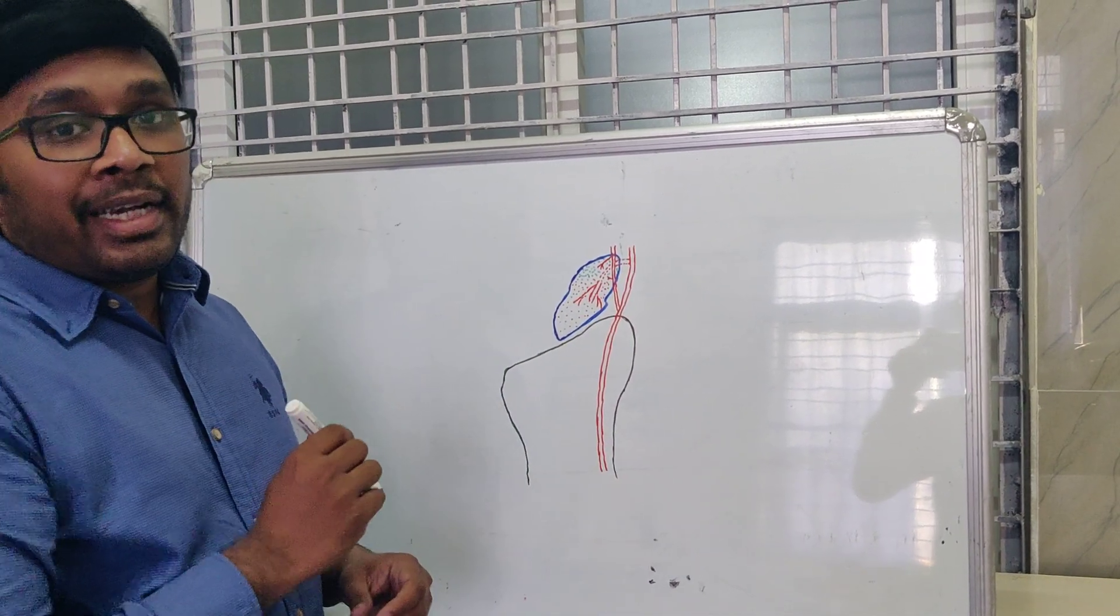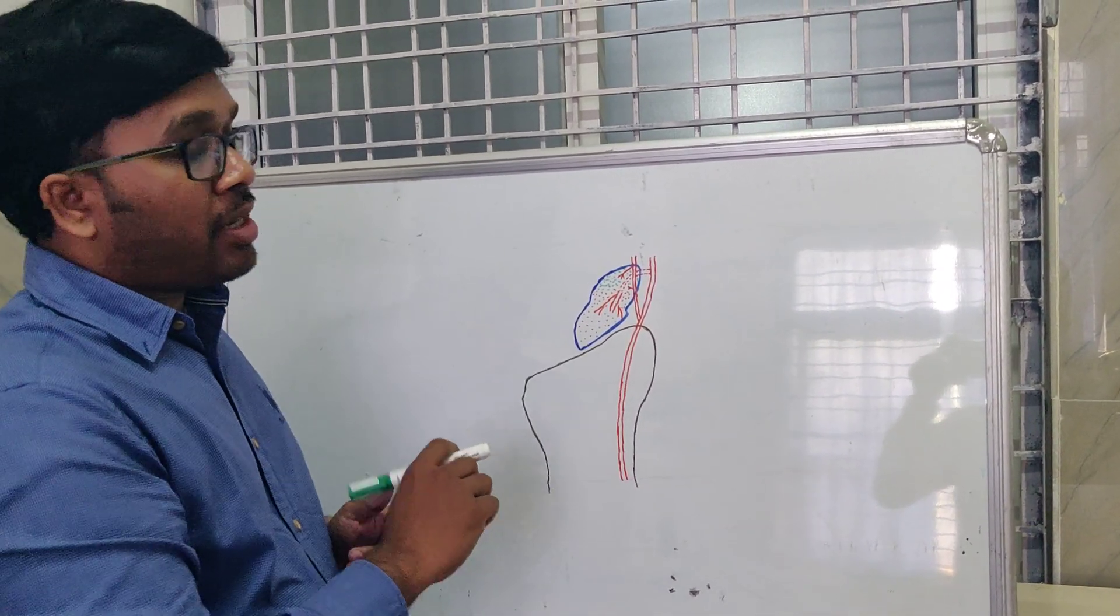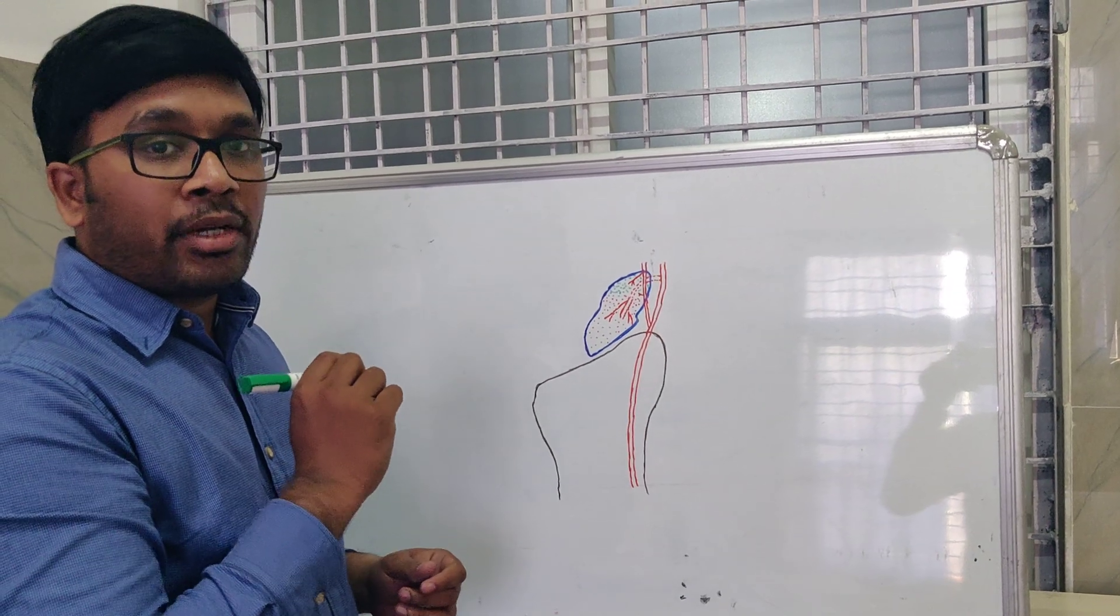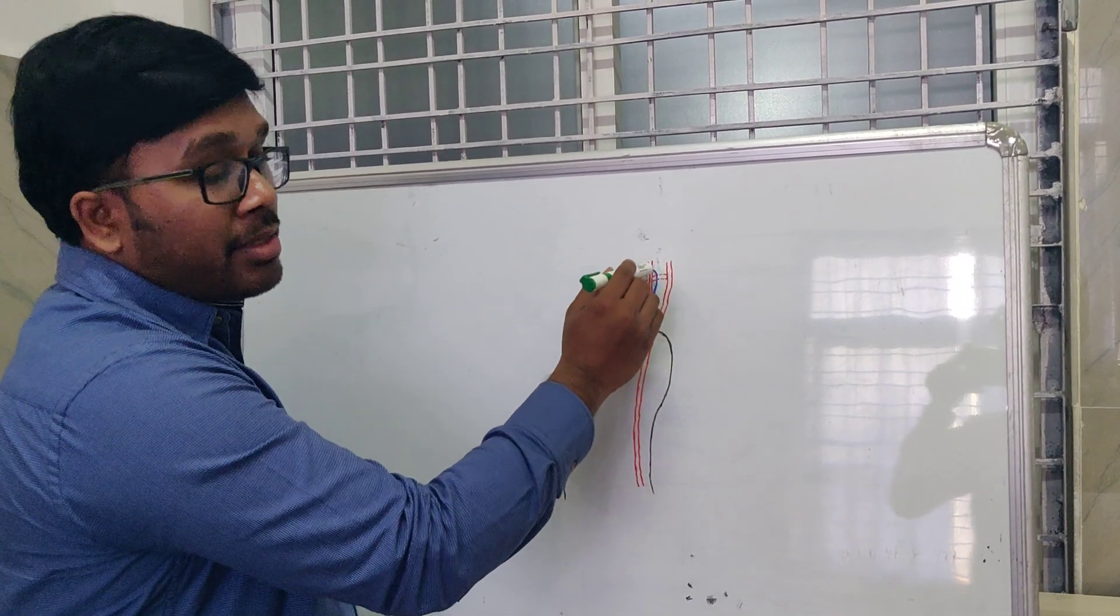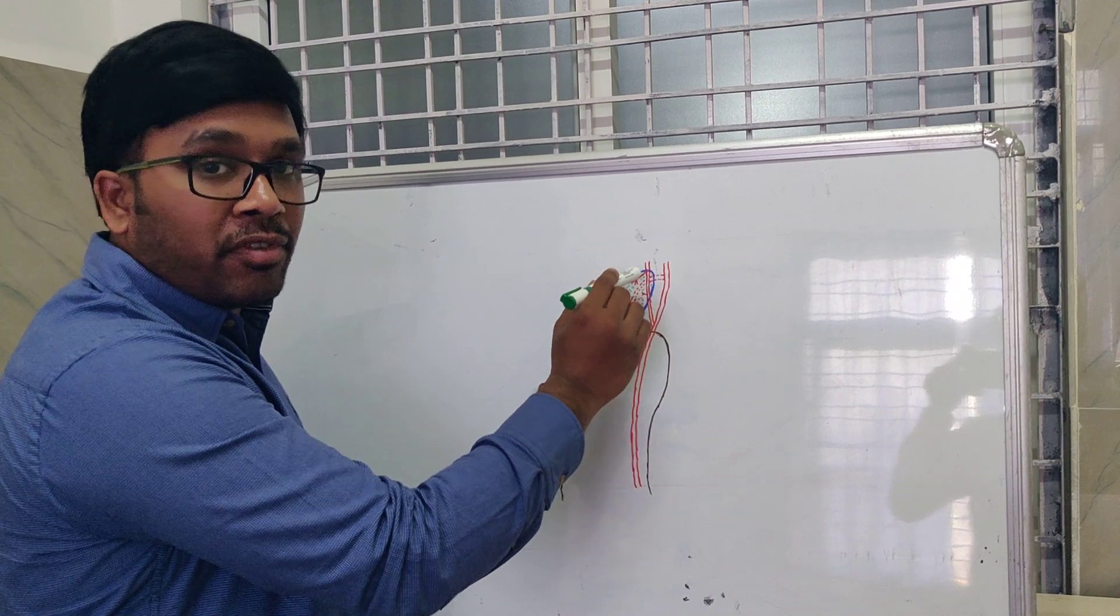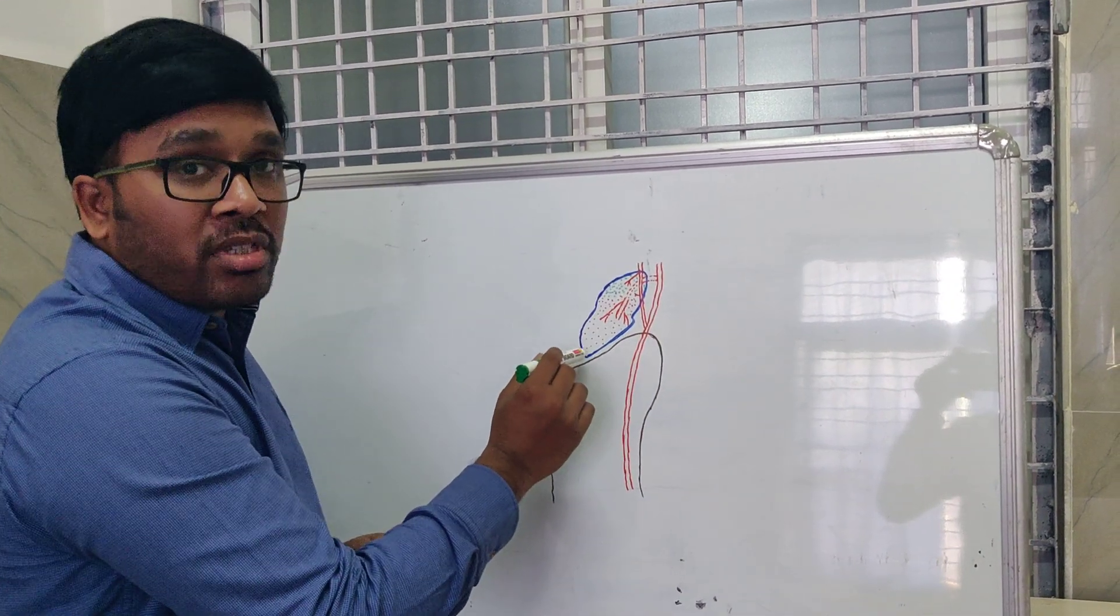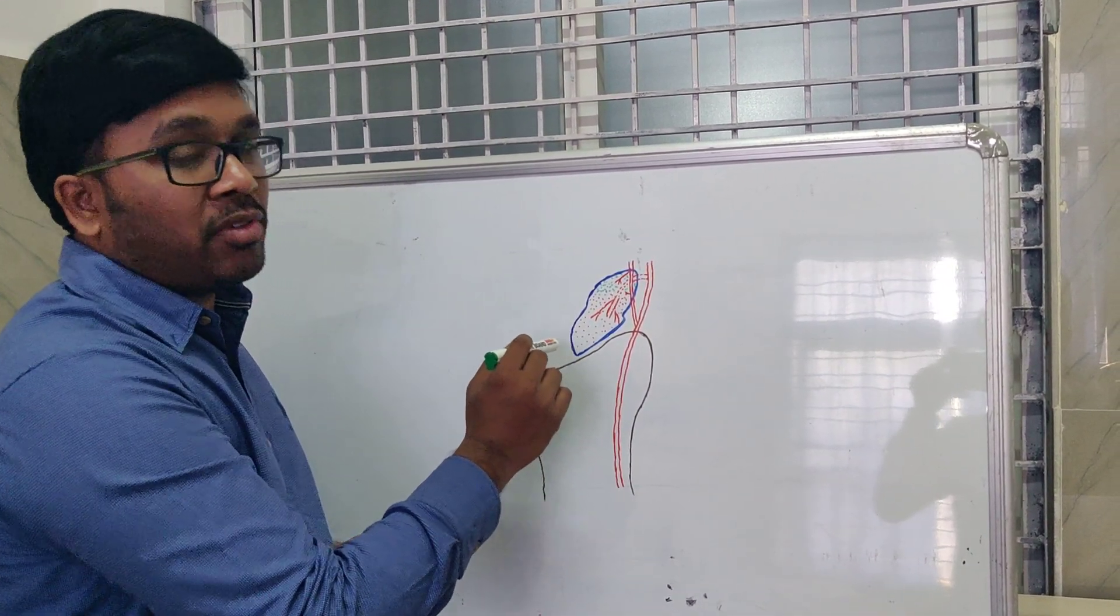The peculiarity of this blood flow is that it is called retrograde blood flow. That is, the distal most part is well perfused, whereas the proximal most part is less perfused.